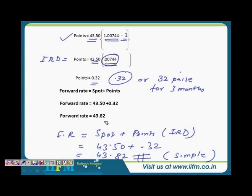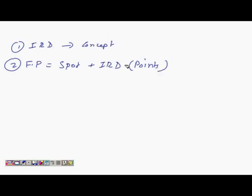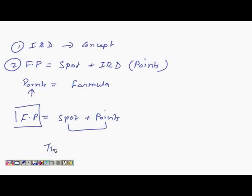Let me make this more concise. First is interest rate differential, the concept we covered in a previous video. Then we said the future price or forward price equals spot plus the interest rate differential, which we call points. There's a formula for points. Once you have the determinants of that formula, you can easily calculate the points. Then FP = Spot + Points, and you get your answer. This will be a price where arbitrage opportunities are not available.